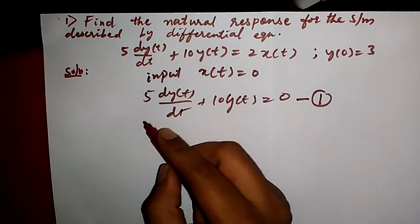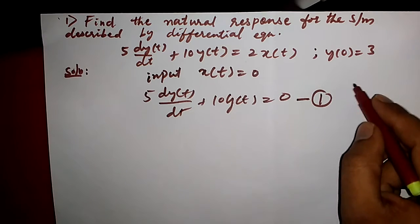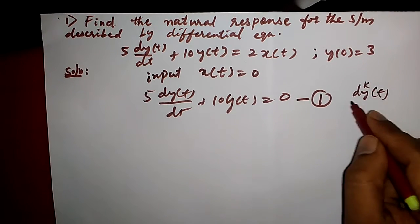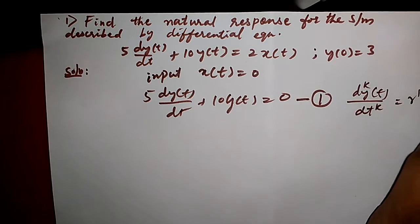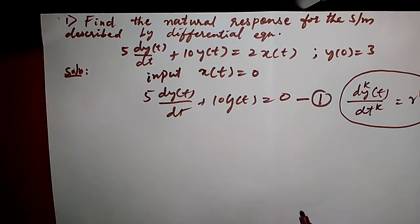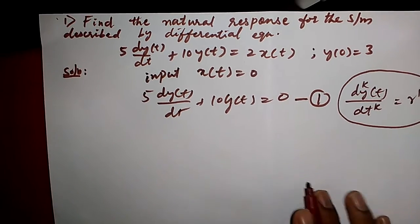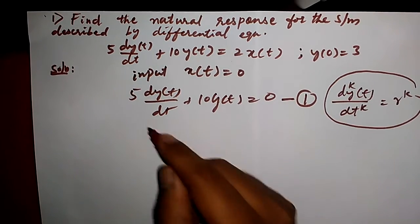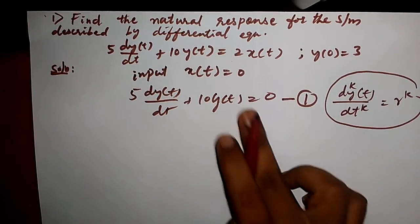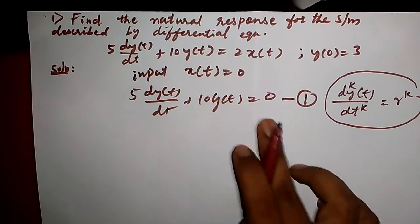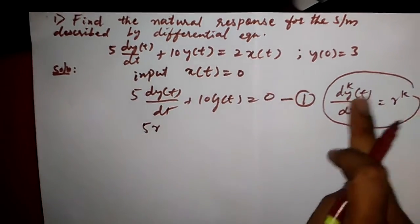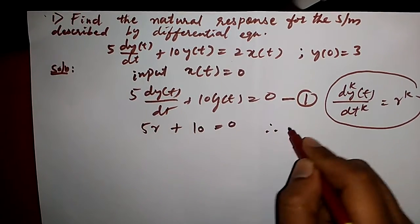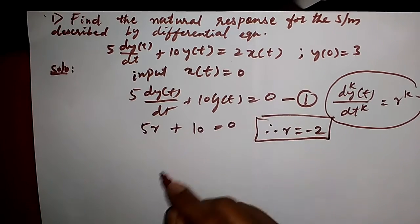To obtain the characteristic equation, we must replace each k-th derivative term with r raised to k. So from the first equation, we can write this as phi(r): 5r plus 10 equal to 0. Therefore, the value of r is given by r equal to minus 2.